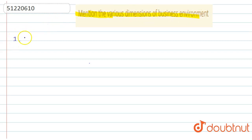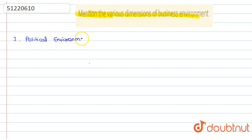So let us start with the first one, which is the political environment. What happens in political conditions? Peace, stability, law and order — this is your business, which is related to your environment.